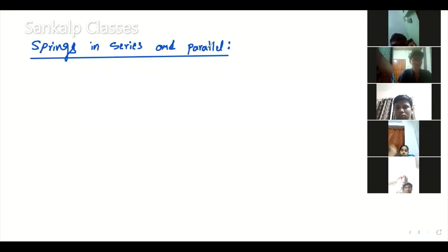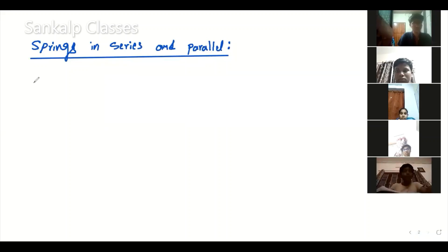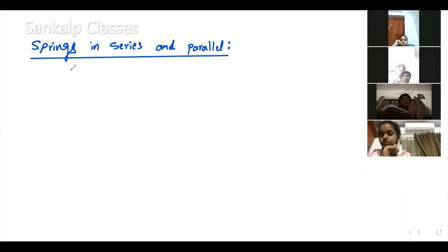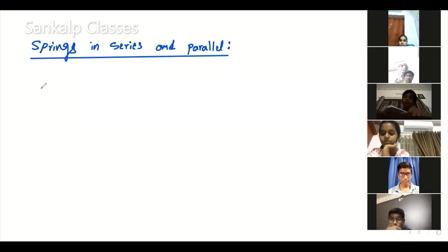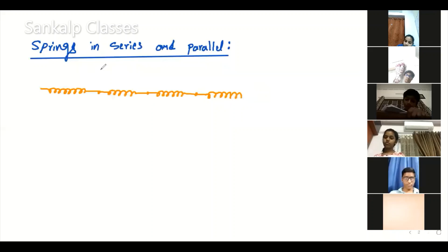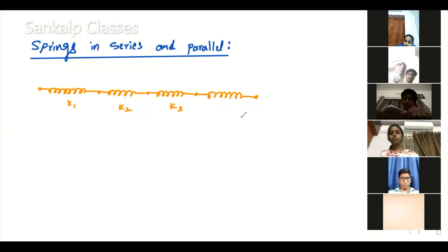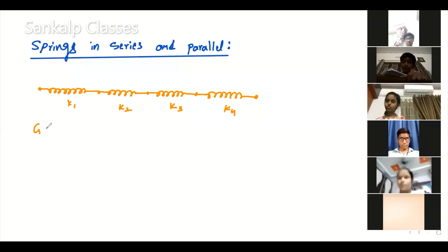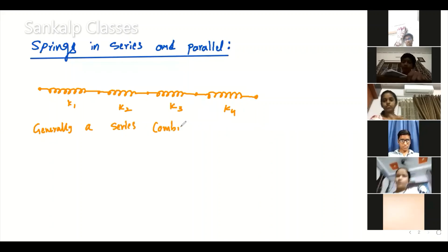I will show the configuration of series and parallel combinations. In series, spring 1 is connected to spring 2, connected to spring 3, connected to spring 4 — with spring constants k1, k2, k3, k4. This is a series combination.